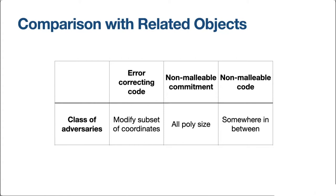We want to guarantee that the receiver can recover the original message. In non-malleable commitments, the adversary can apply an arbitrary polynomial-time function — it's not limited in how it accesses the codeword, it can do arbitrary computation as long as it's polynomial size. In a non-malleable code, the adversary is somewhere in between: not an arbitrary polynomial-size machine, but hopefully a little more than just changing a subset of coordinates.